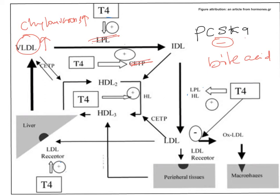Because CETP function decreases, the exchange of triacylglycerol from VLDL, IDL, and LDL to HDL — and cholesterol ester from HDL back to them — does not occur. This means VLDLs, IDLs, and LDLs retain more triacylglycerol and have less cholesterol ester. Abnormal lipoproteins such as lipoprotein X and beta-VLDL can be seen in hypothyroidism.